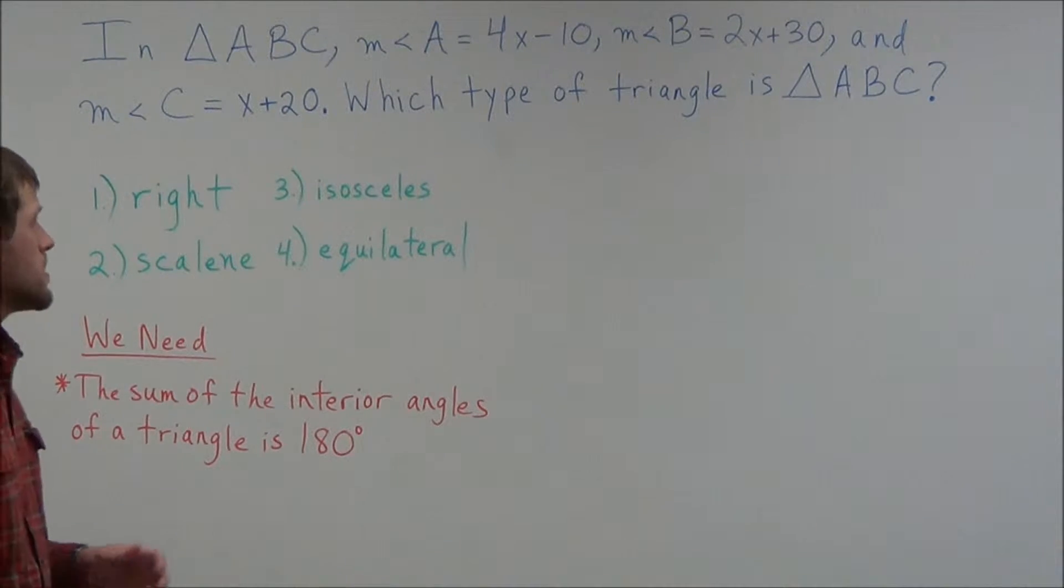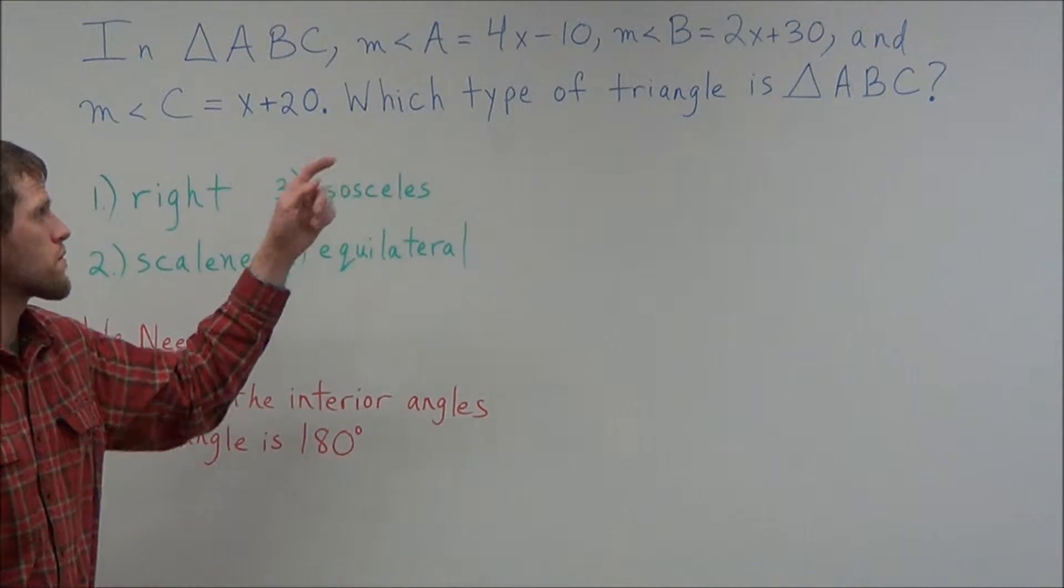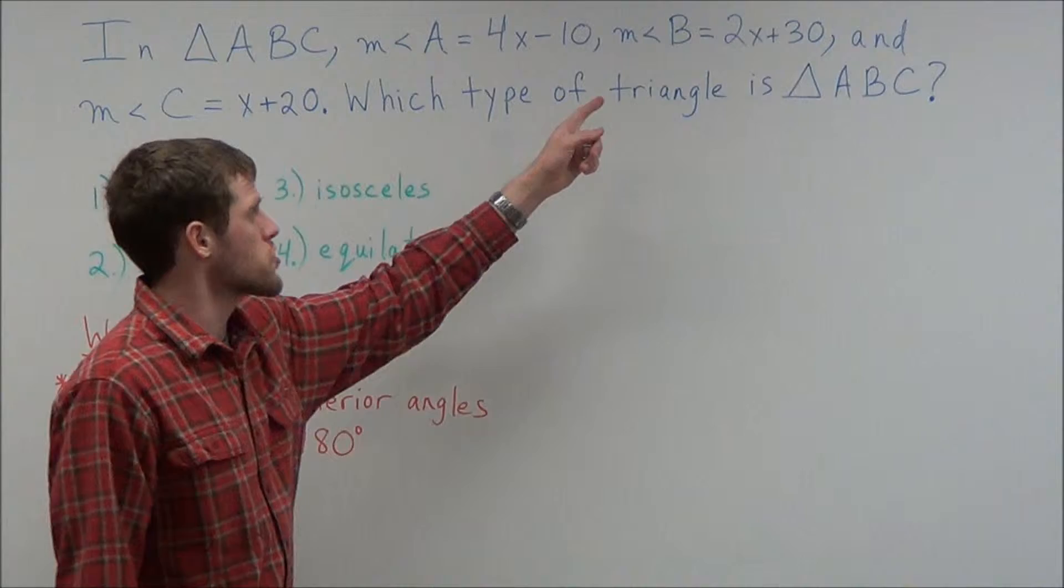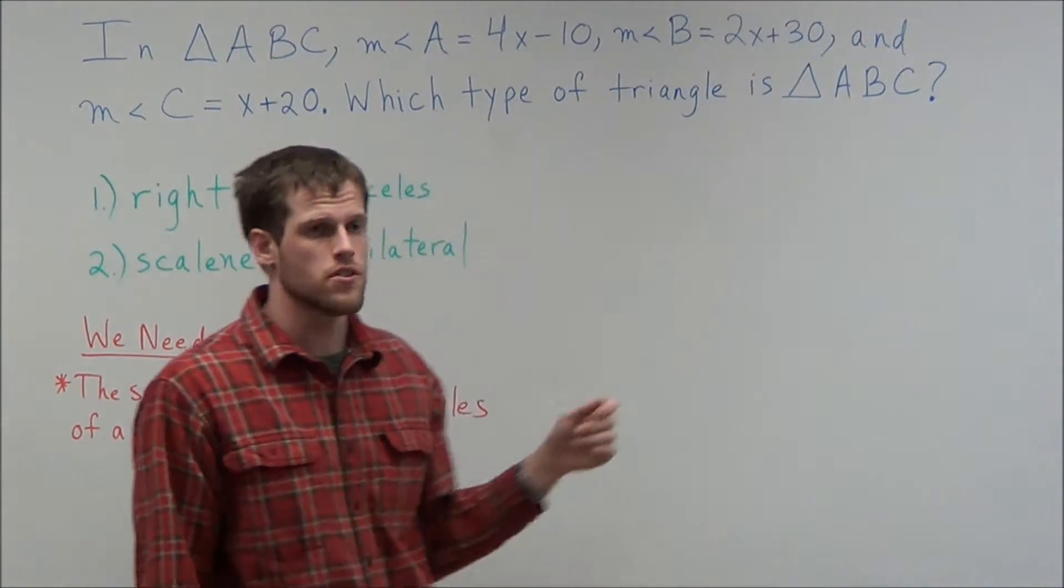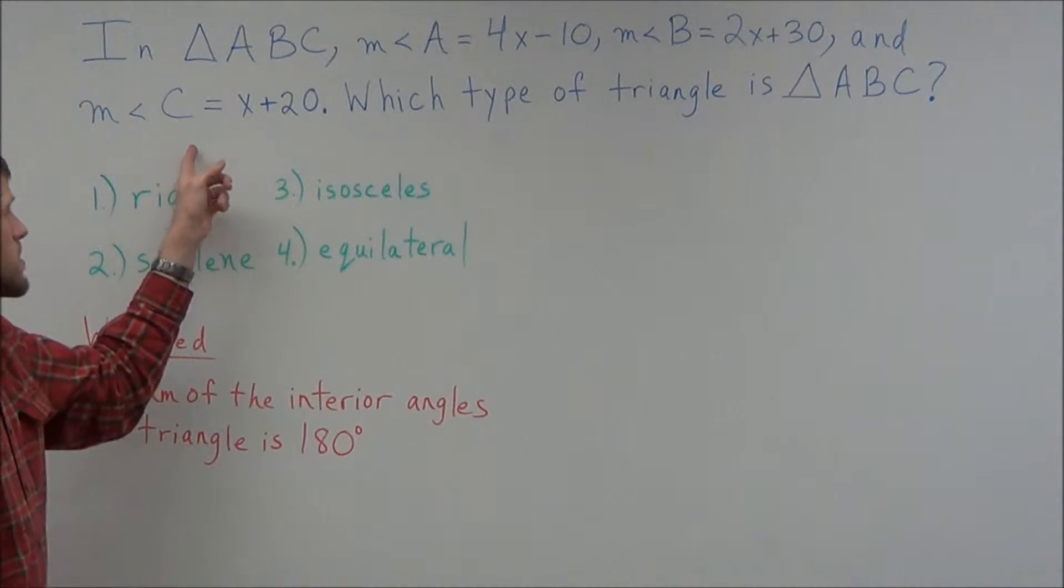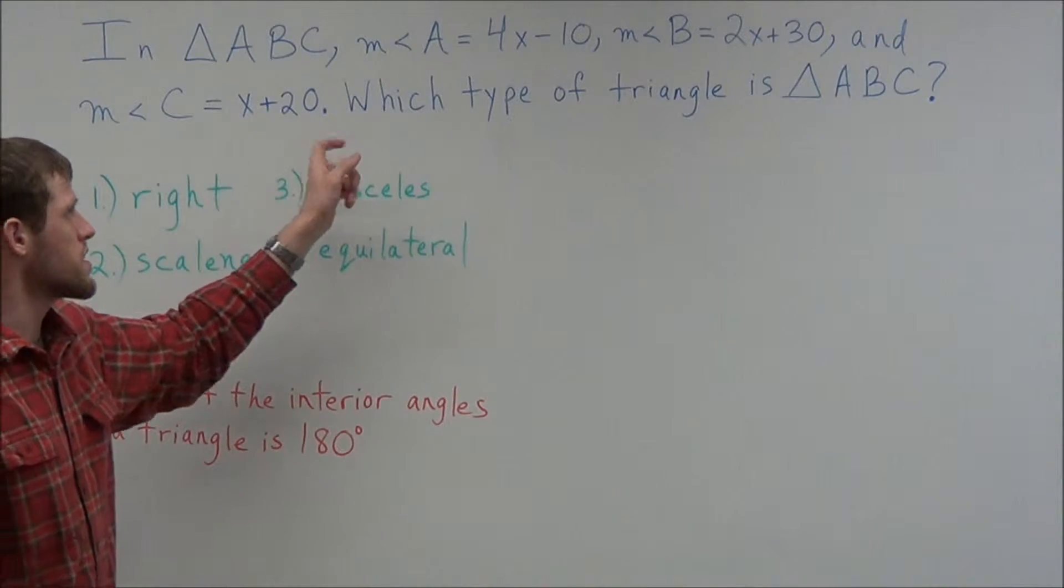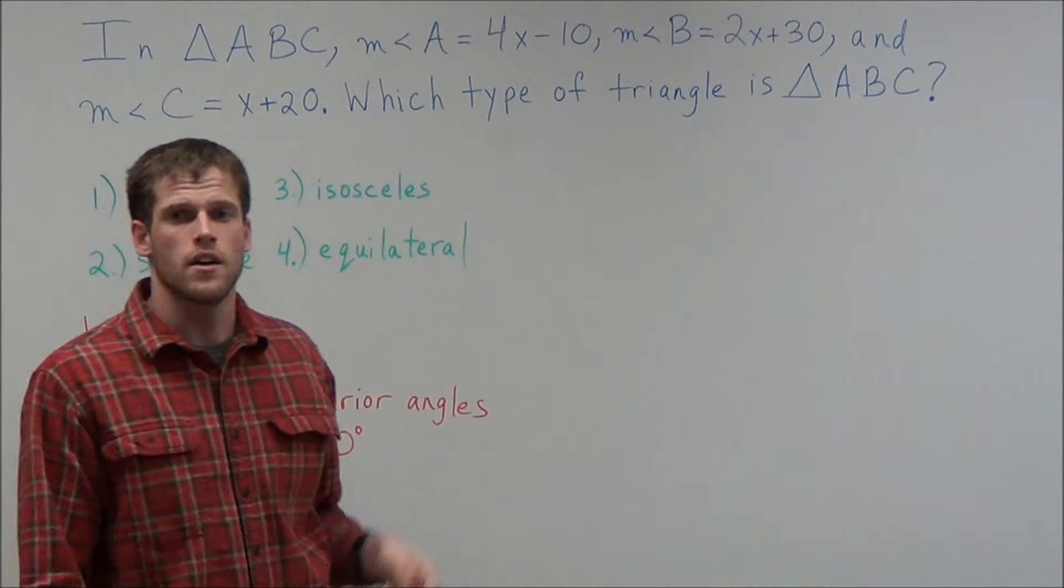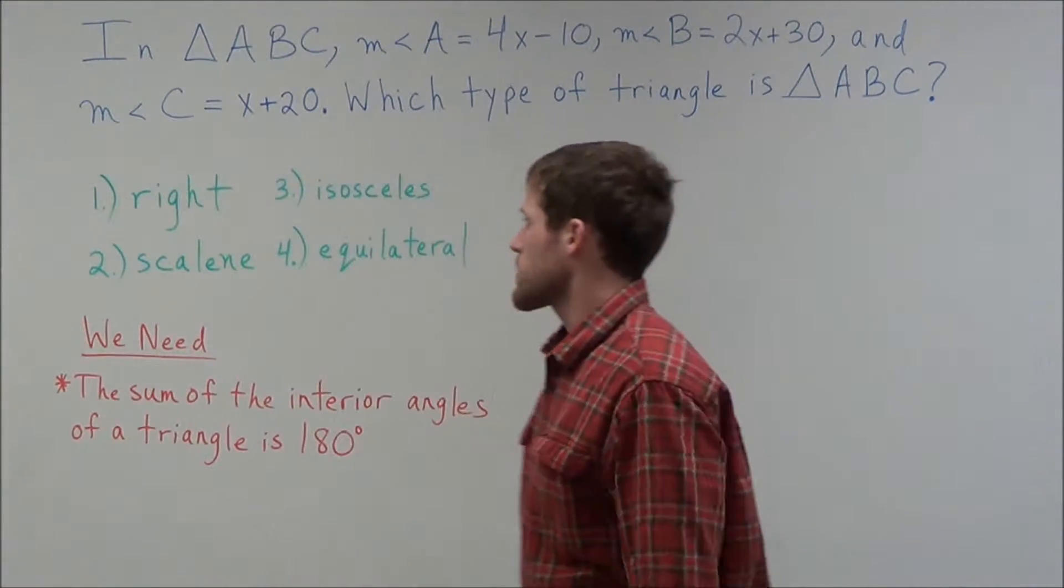So we have, in triangle ABC, the measure of angle A equals 4x minus 10. We have the measure of angle B equals 2x plus 30. And we have the measure of angle C equals x plus 20. And we need to find which type of triangle is triangle ABC.